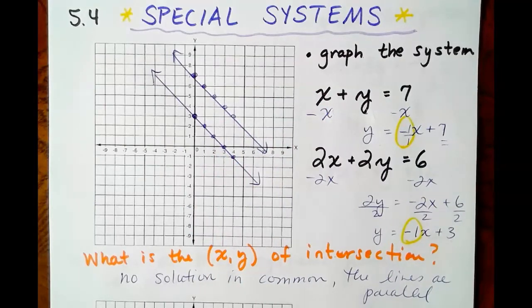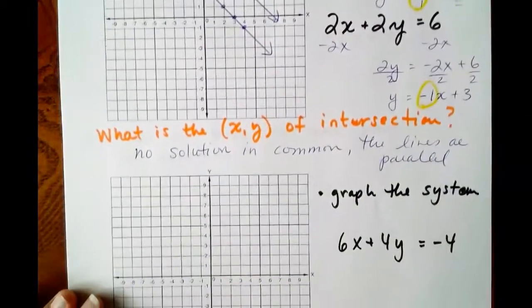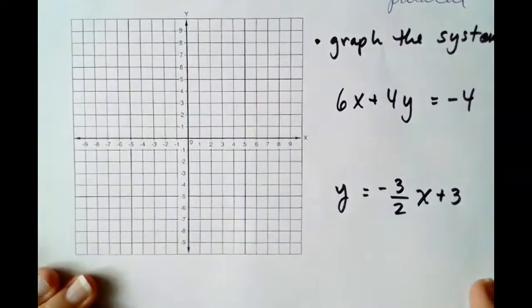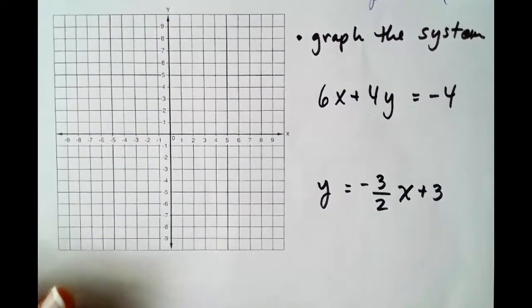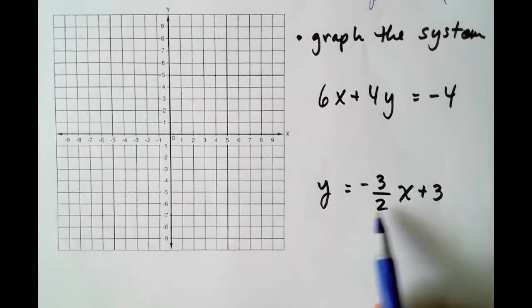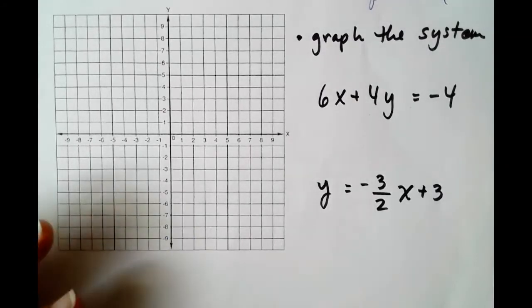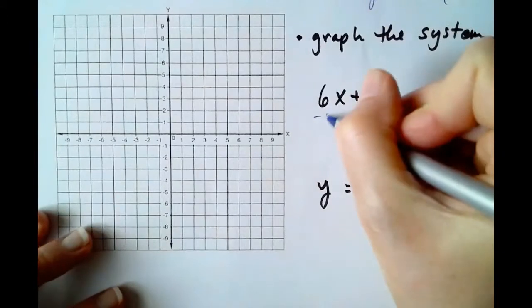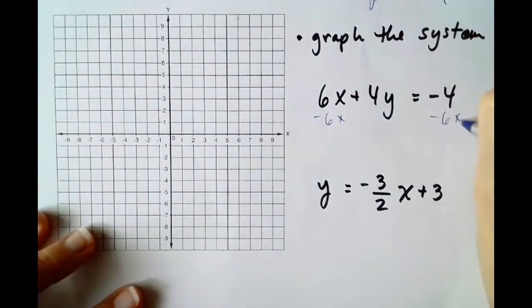Let's look at the next problem. We're going to be graphing the system again, same procedure: solve the equations for y and then graph. The second one has already solved for y for us. Let's take a look at the first one. Minus 6x, minus 6x. 4y equals negative 6x minus 4.